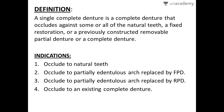The indications for a single complete denture are: number one, occludes to natural teeth; number two, occludes to a partially edentulous arch replaced by a fixed partial denture; number three, occludes to a partially edentulous arch replaced by a removable partial denture; and number four, occludes to an existing complete denture.